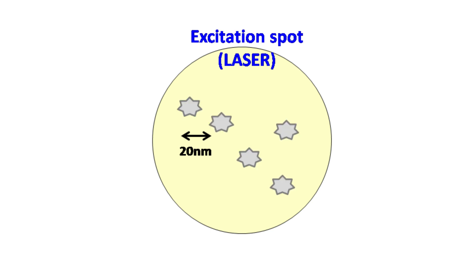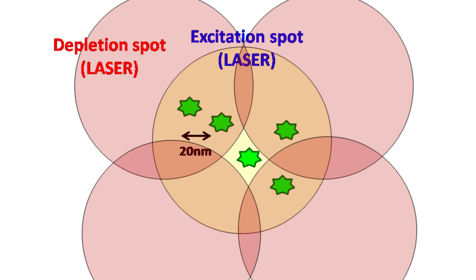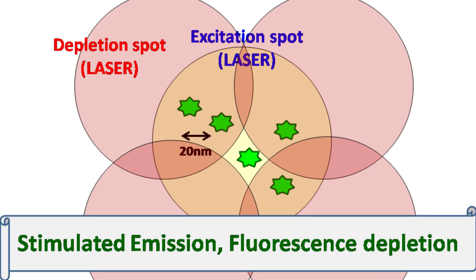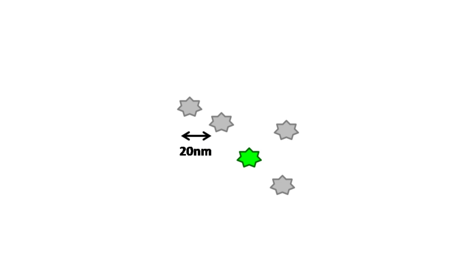In the next step, a depletion laser focuses around the excitation spot. This results in the depletion of fluorescence from the surrounding molecules — only the fluorescent molecule in the center of the excitation spot continues to give fluorescence, while the surrounding molecules have their fluorescence depleted.